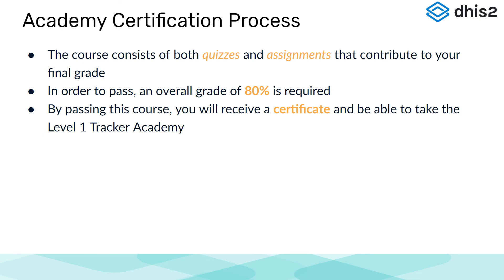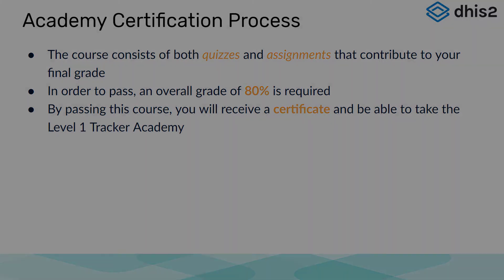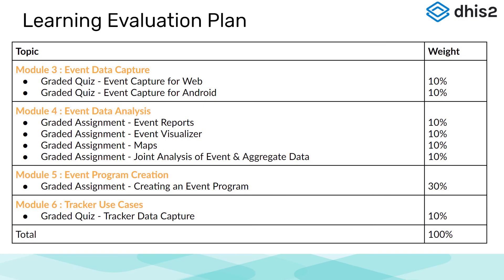Now let's discuss how you will be able to obtain a certificate for passing this course. The course consists of both quizzes and assignments that contribute to your final grade. In order to pass, you must receive an overall grade of 80%. By passing this course, you will receive a certificate and will then be able to take the Level 1 Tracker Academy. We can break down the assessment process in more detail.